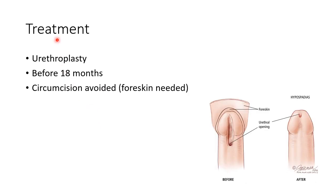Let us see about the treatment of hypospadias. Urethroplasty is the treatment of choice and should be done before 18 months of age. In patients with hypospadias, circumcision should be avoided because the foreskin is needed for reconstruction. This picture shows a hypospadias case before and after urethroplasty.